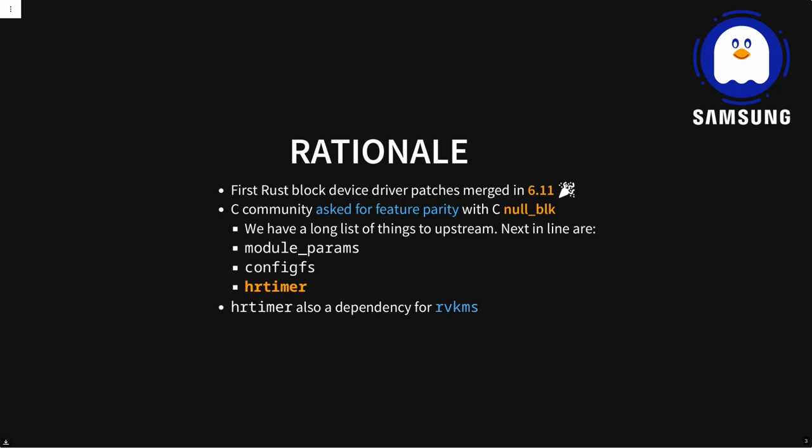The reason I'm doing this work is that the Rust block abstractions — I'm pushing those upstream — and one of the deals with the block community was we put in a null block driver, and they would like to see feature parity with the C null block driver so they can more easily compare between what a driver looks like in C and what it looks like in Rust. That sent me building abstractions for a lot of subsystems that the null block driver interfaces, one of them being the HR timer subsystem for emulating IOs that have some kind of completion latency.